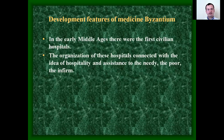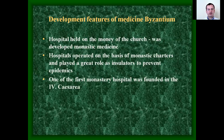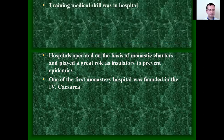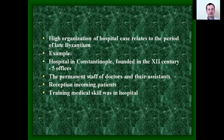In the early middle ages, the first civilian hospitals appeared. The organization of these hospitals was connected with the idea of hospitality and assigned to the needy, the poor, and the infirm. Hospitals held on the money of the church developed monastery medicine. Hospitals operated on the basis of monastery charters and played a great role in isolating patients to prevent epidemics. One of the first monastery hospitals was founded in Caesarea.